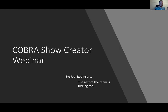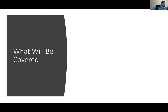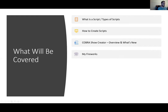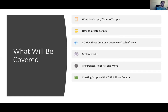We're going to spend about ten minutes with a PowerPoint and then transition into Show Creator. You can access a free trial — I'll talk about that in a little bit. We're going to cover: what is a script and the types of scripts you can create, how to create scripts, an overview of Cobra Show Creator, what is new in the web-based version, the My Fireworks section, preferences, reports, creating scripts with Show Creator, and exporting your script and audio file.